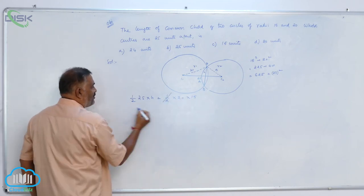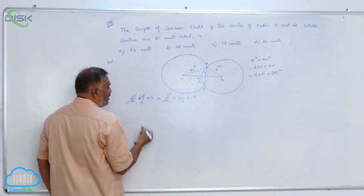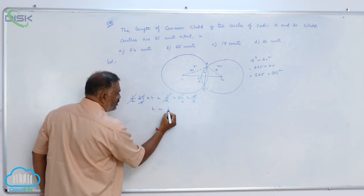Calculate H. Half gets cancelled, 5 times 5, 5 times 4, again 5 times 3. So H is equal to 12.